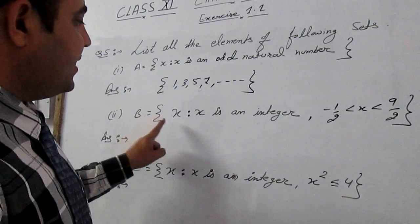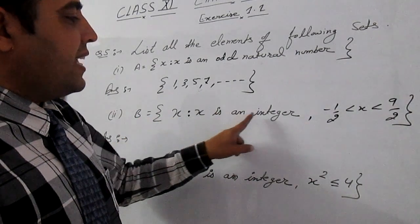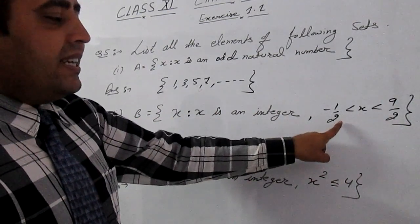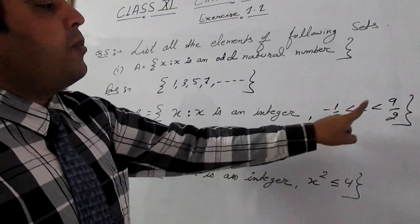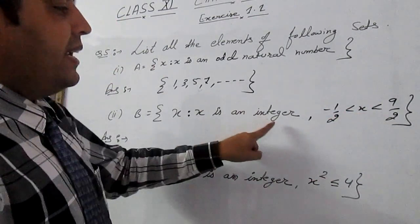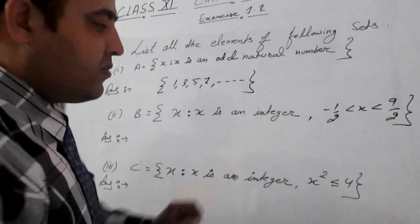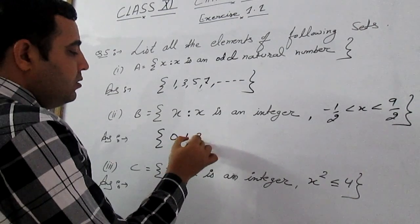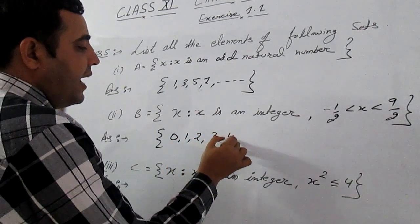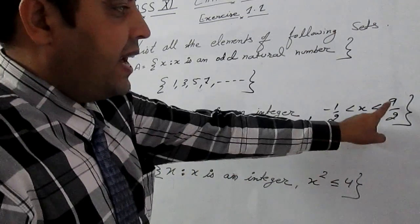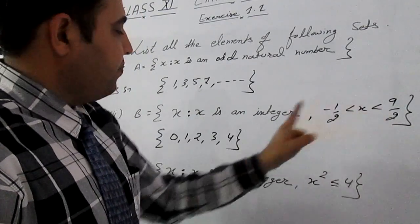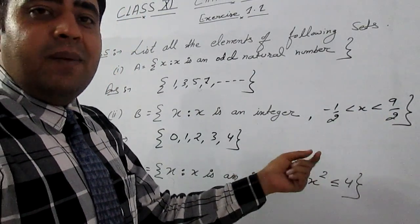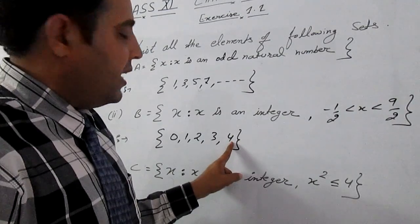Now, B part is given X is such that X is an integer, that integer is greater than minus 1 upon 2 and less than 9 upon 2. Then the integers which are greater than minus 1 upon 2 is 0, 1, 2, 3 and 4 because we know that 9 upon 2 means 4.5. Then the integer which comes just before 4.5 is 4.